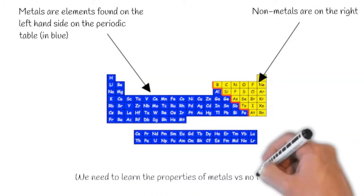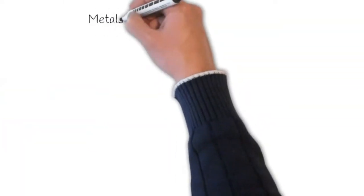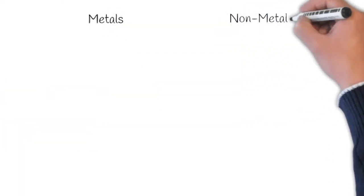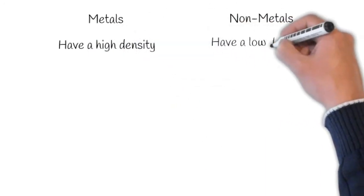We need to learn the properties of metals versus non-metals. So let's draw a table. Metals have a high density, whereas non-metals have low density.